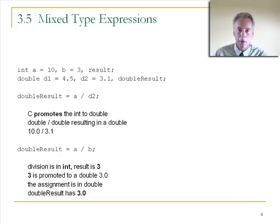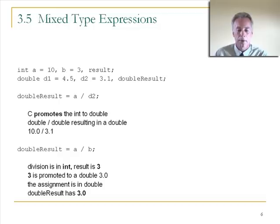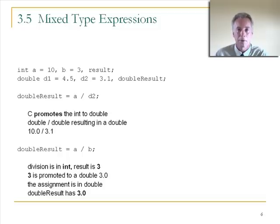The operator data type is determined when the operator is evaluated. A and B are both ints, so the division A/B happens in integer — result is 3. Then C wants to assign integer 3 to a double, so it promotes 3 to 3.0 for assignment. But 3.0 is no better than having 3 — if you wanted the floating point result of 10/3, you shouldn't have let the division happen in integer.